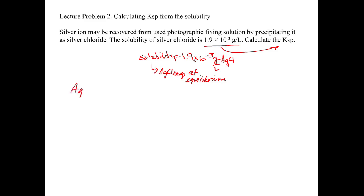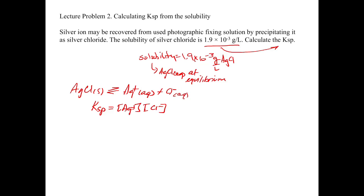Step one is to write the reaction: silver chloride solid goes back and forth with silver plus aqueous plus Cl minus aqueous. Directly below that, we write the Ksp expression, which equals [Ag⁺][Cl⁻]. You have to know how to write the ionic formula of the compound to get started. Once you know that, put the solid on the left, the ions on the right with correct stoichiometric ratios, and the Ksp expression follows from the reaction.